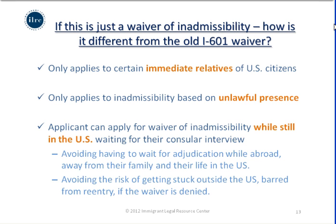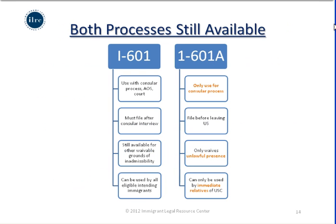The main way this is different is that it allows somebody to apply for an unlawful presence waiver before they have left the United States and triggered the need for the waiver. This is why it is called provisional — it allows somebody to stay in the United States while waiting for USCIS to adjudicate the waiver, before the person takes the risk of leaving and potentially being barred from reentering if the waiver is denied after the consular interview.